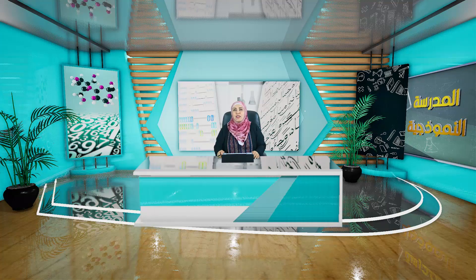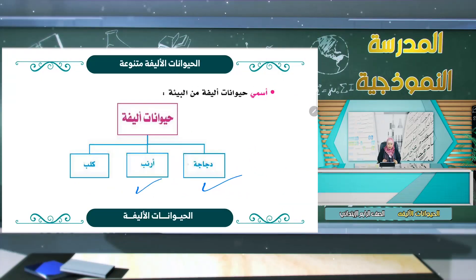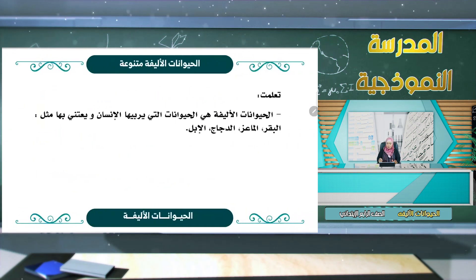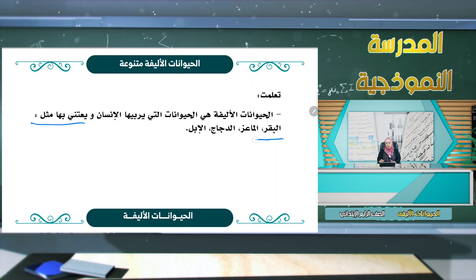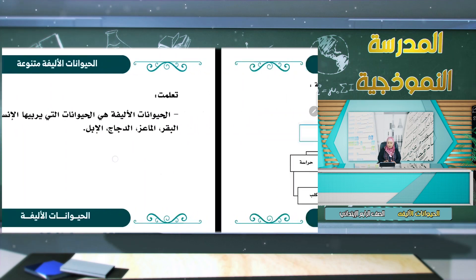الحيوانات الأليفة: تعرفنا في فصول سابقة أن الحيوانات الأليفة هي التي نربيها. إذن الحيوانات الأليفة هي الحيوانات التي نربيها، مثل الدجاجة والأرنب والكلب والبقرة. هي حيوانات يربيها الإنسان ويعتني بها، مثل البقر والماعز والدجاج والإبل.